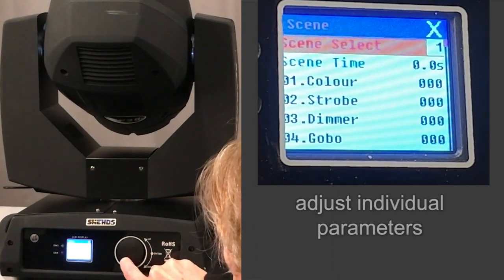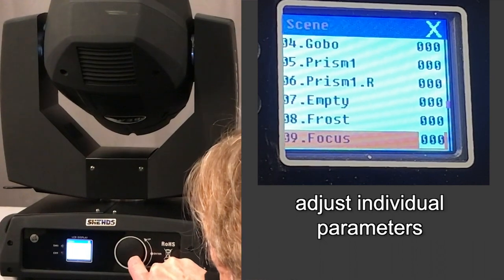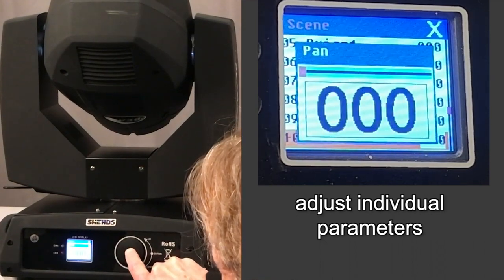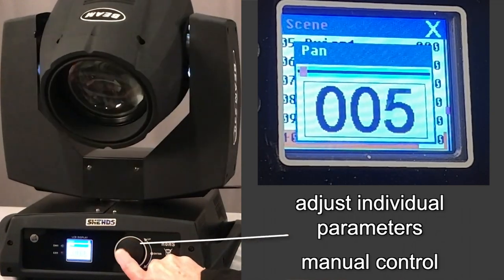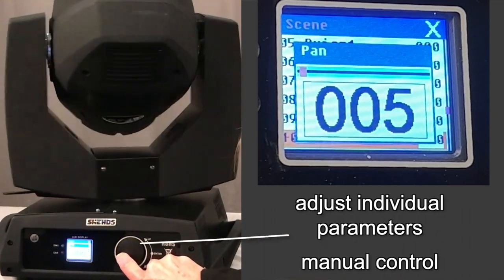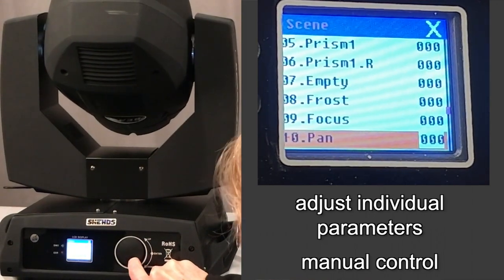On this page, you can go into the individual parameters and control them manually. So let's see, we'll go up to pan. Just by spinning the encoder, you can set the pan. We'll leave it at zero.